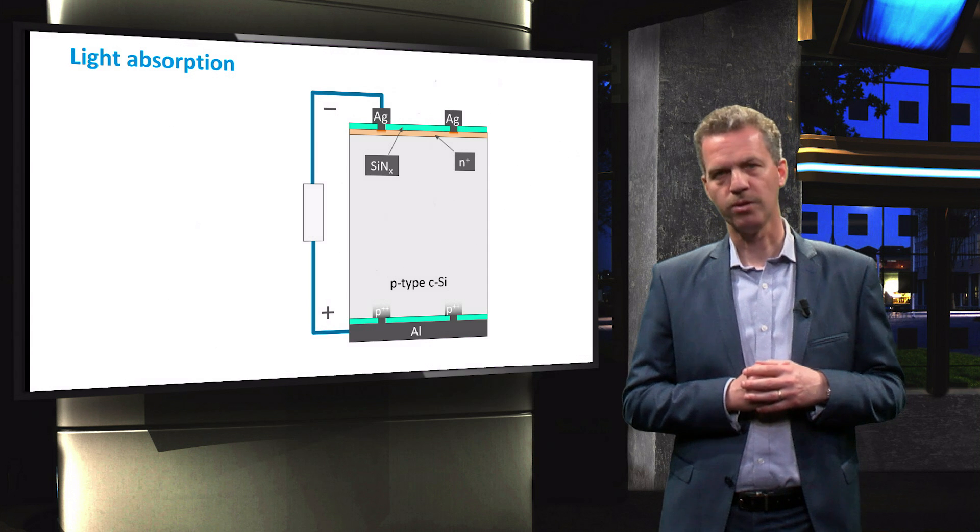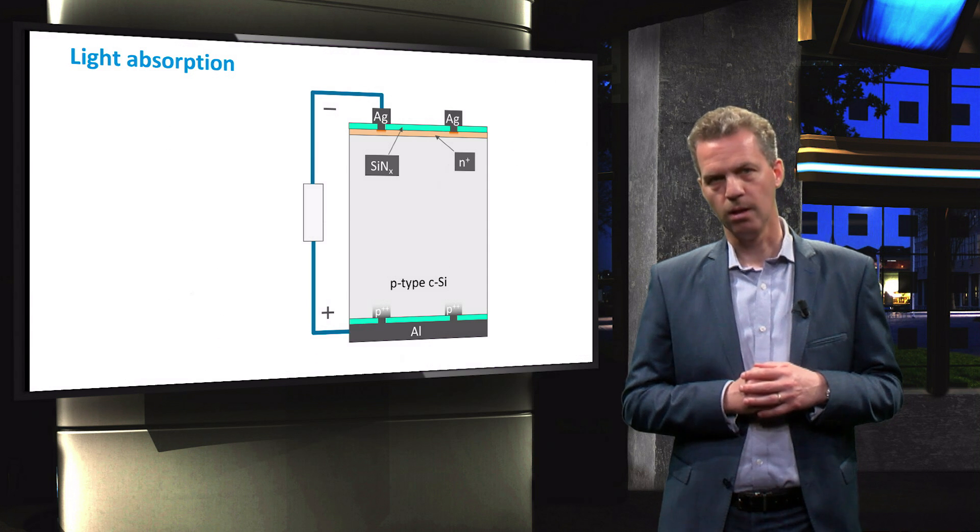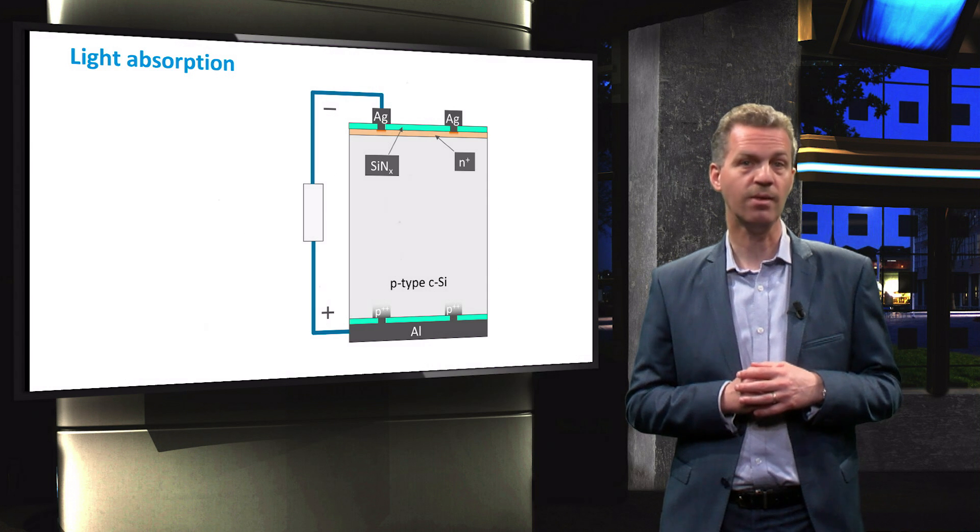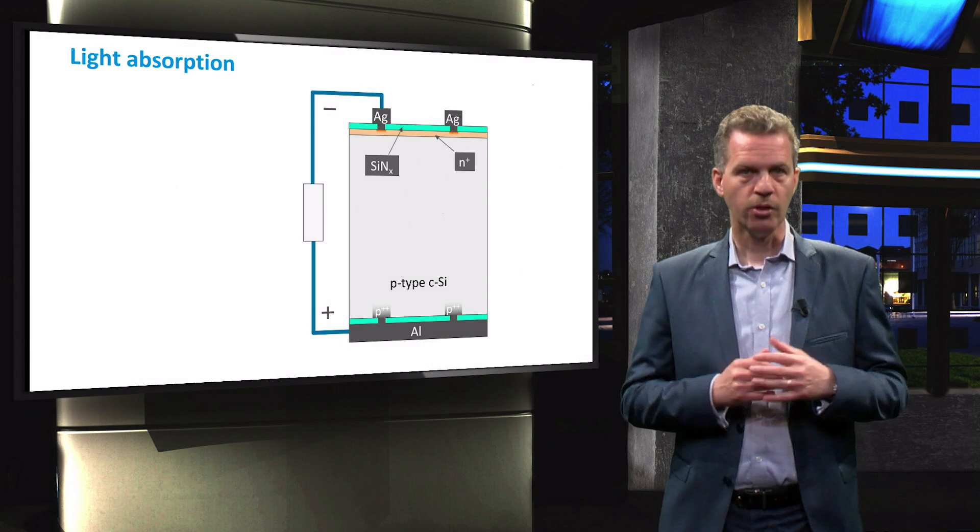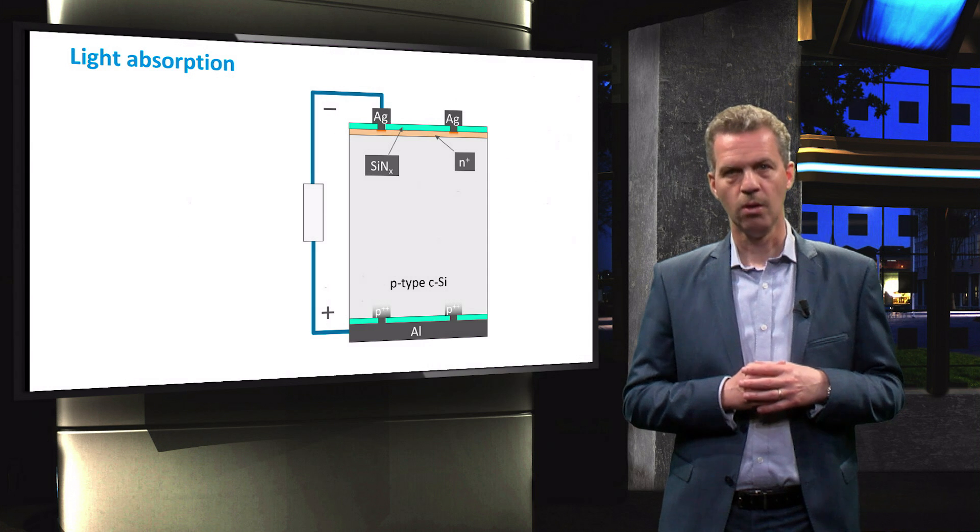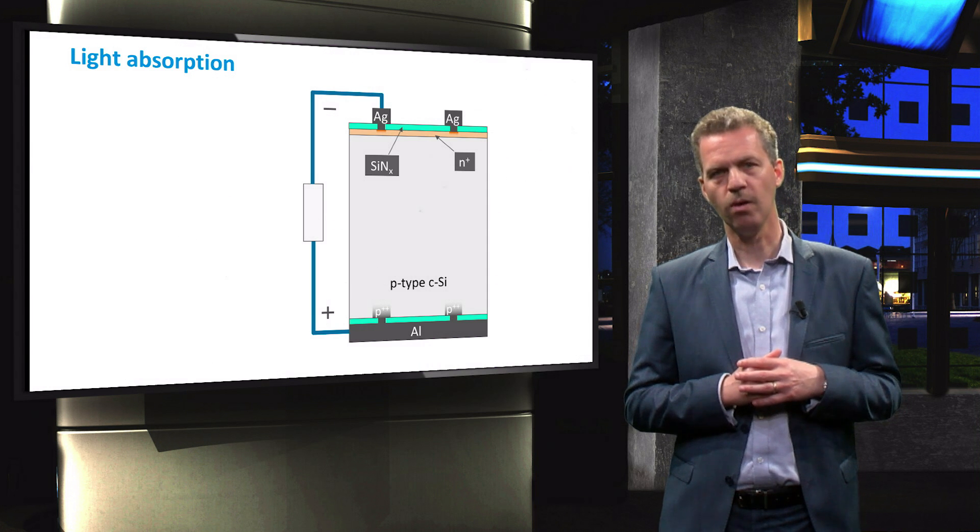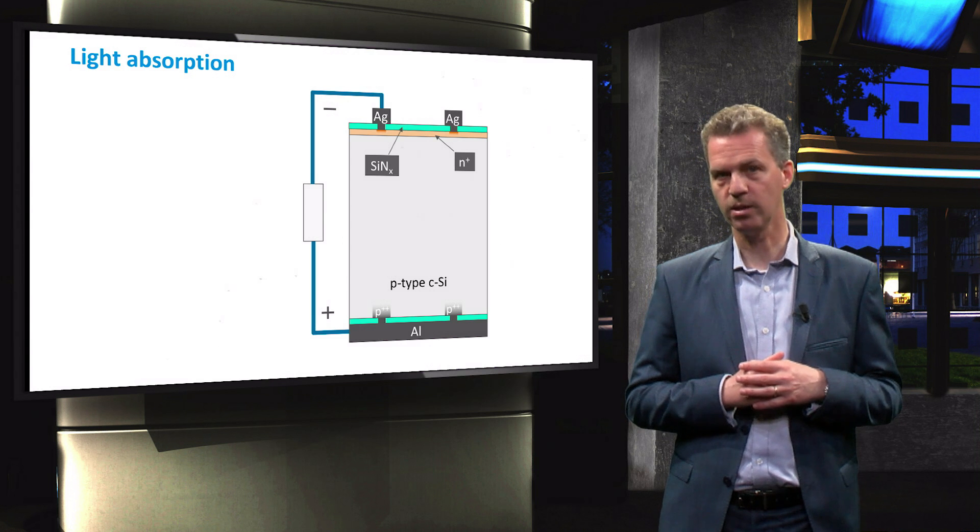If we connect the front and back contacts via an external load, an electrical current can flow through this external circuit and deliver power. The solar cell is a current source, which means that every charge carrier that contributes to the current flow has been generated in the cell by light absorption.